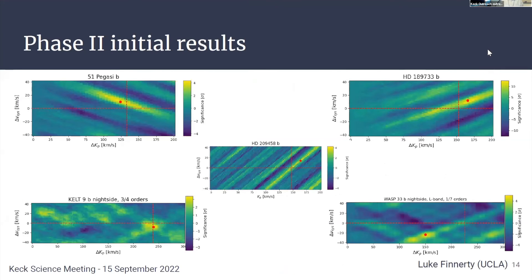We've actually started doing this with KPIC phase two. This is data from July and August, and we now have well-developed tools to analyze this data quickly. We made strong detections of 51 Pegasi b and HD 189733b. HD 209458 had some weather problems so that's a little sketchier. KELT-9b, another ultra-hot Jupiter, to detect the night side — though there are some systematics we're tracing down. We're also trying to get this working in L-band because that would be particularly effective for cooler planets. A single order shows a feature at the expected planet velocity, and we're hopeful that as we better calibrate our L-band data and use more orders, we'll be able to do this in L-band as well.